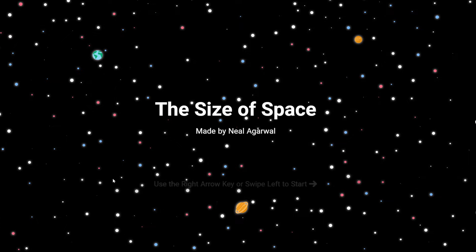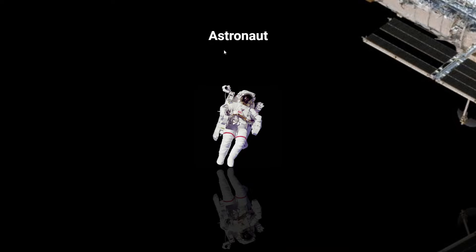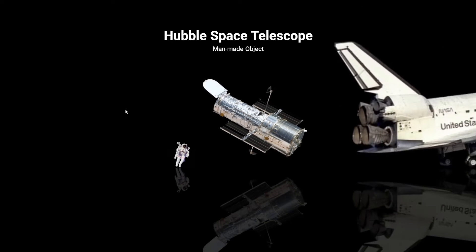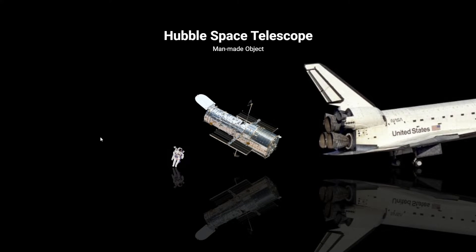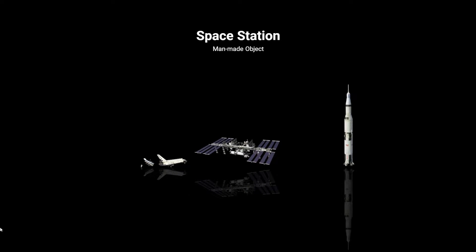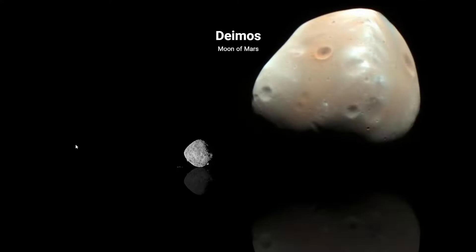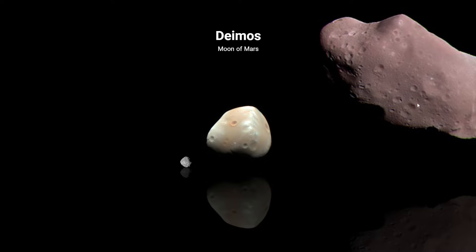We start with a narwhal, an astronaut, a space shuttle, a space station, a Saturn V rocket. Then we get to new objects — diamonds — which makes me wonder: was the starting point Earth, or is it Deimos, the moon of Mars?